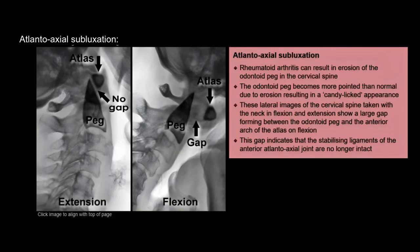Lateral images of the cervical spine taken with the neck in flexion and extension show a large gap forming between the odontoid peg and the anterior arch of the atlas on flexion. This gap indicates that the stabilizing ligaments of the anterior atlantoaxial joint are no longer intact.